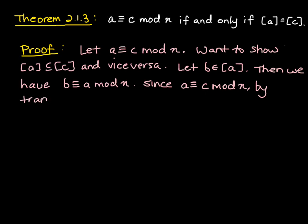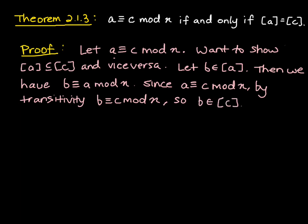By transitivity, b is congruent to c mod n. So recapping: we have that b is congruent to a mod n, and a is congruent to c mod n. So by the transitivity property of congruence, we can say that b is congruent to c mod n. We started with some element b in the congruence class of a, and showed that element must be congruent to c mod n — which is the same as saying b is in the congruence class of c. So the congruence class of a is contained in the congruence class of c.